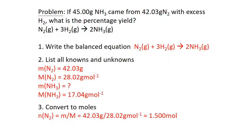The first step is to write the balanced equation — it's already given. List all the knowns and unknowns: the mass of nitrogen is known from the question, the molar mass of nitrogen is from the periodic table. The mass of ammonia obtained from the experiment is also known, and its molar mass is from the periodic table. But you need to calculate the mass of ammonia you would get theoretically if there was 100% yield.